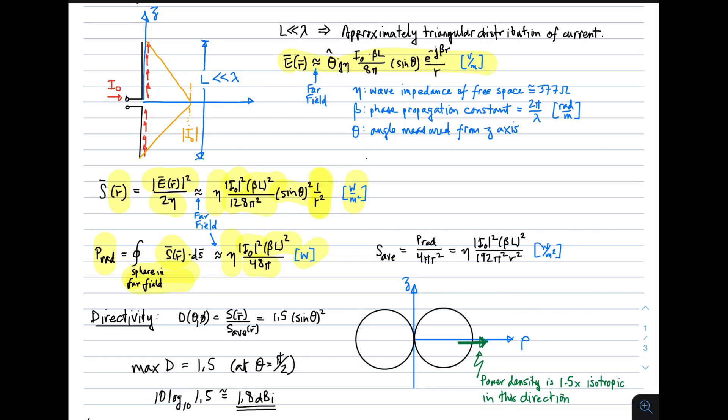Because we are going to be interested in directivity, we also want to know the average power density. That's the power density averaged over all directions. That is simply the radiated power divided by 4 pi R squared, which is the area of a sphere. So we do that, we get this expression. And that has units of watts per meter squared. So we have everything we need here to compute the directivity.